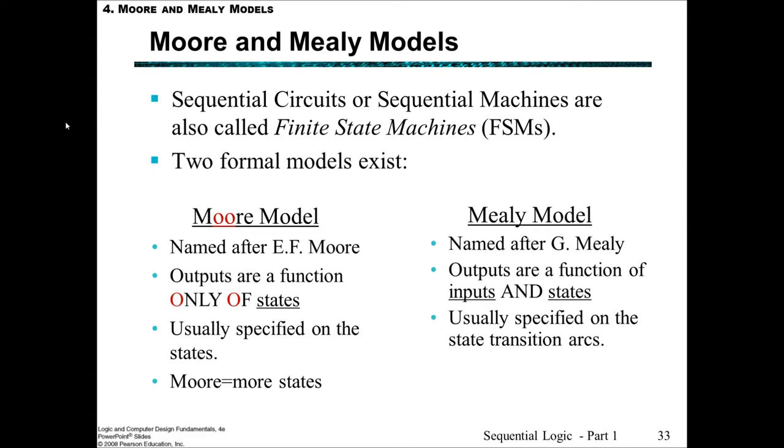This is a term that you would hear much more in computer science. There are two formal models that exist, the Moore model named after Edward Forrest Moore who was an American professor in mathematics and computer science and he presented the Moore finite state machine in a paper he wrote all the way back in 1956. For a Moore model, the outputs are functions only of the states. The outputs are functions only of the states, it's irrelevant what the input is because it only matters what state you're in and the outputs are usually specified on the states themselves. Another way to remember is that if you looked at the two models of the finite state machines next to each other you would find that Moore model would have more states.